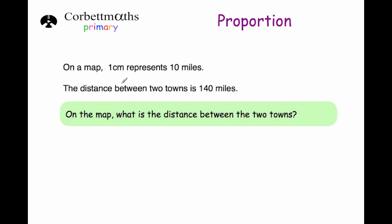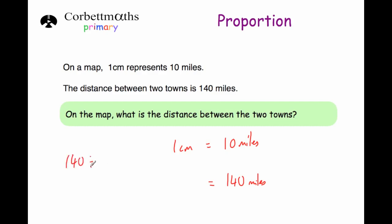The next question: on a map, one centimetre represents 10 miles. That's our scale — one centimetre equals 10 miles. The distance between two towns in real life is 140 miles, and we want to figure out how many centimetres that would be. For every 10 miles it's one centimetre, so we divide 140 by ten, which gives us 14. So on the map the distance would be 14 centimetres.